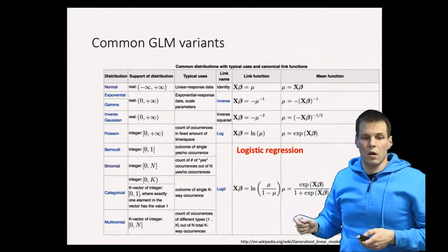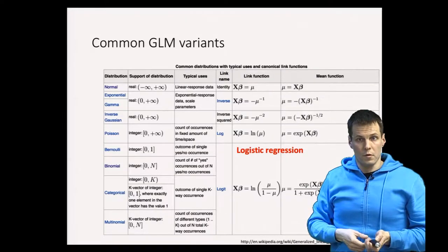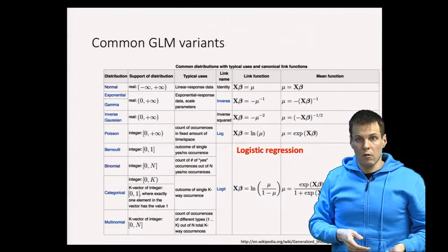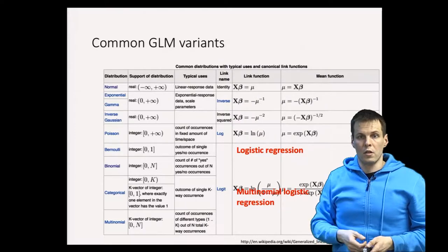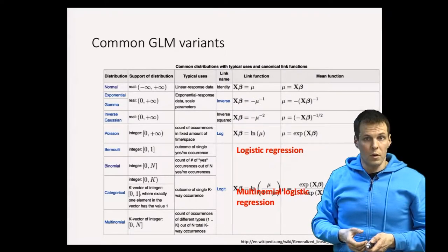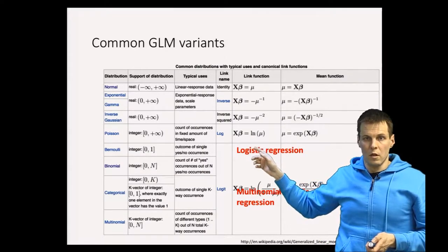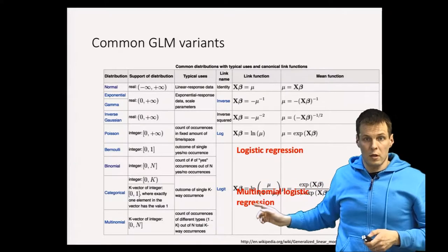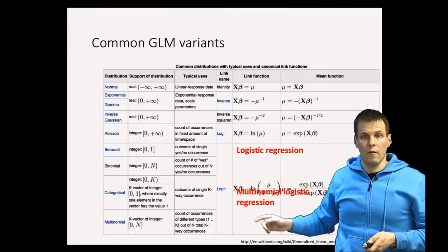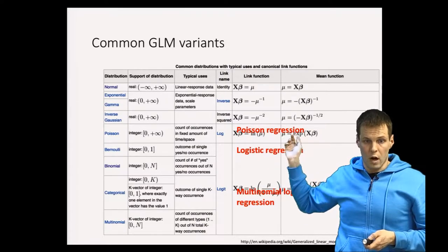The multinomial distribution with the logit link gives us multinomial logistic regression, which is very commonly used for categorical dependent variables — a choice between multiple options rather than just two. Then we have Poisson regression analysis, which is very commonly used for counts.